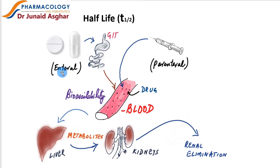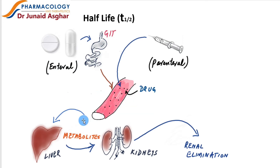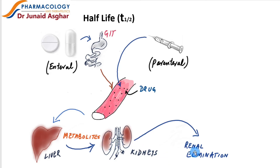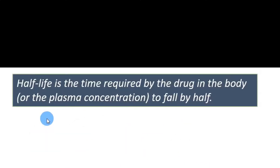In the case of the enteral route, the drug enters the GIT first, from where it is diffused into the blood circulation. Some drugs need to be broken down or metabolized — chemically changed — in the liver before being sent to the kidneys. Consequently, the drug reaches the kidneys and is eventually eliminated via urine.